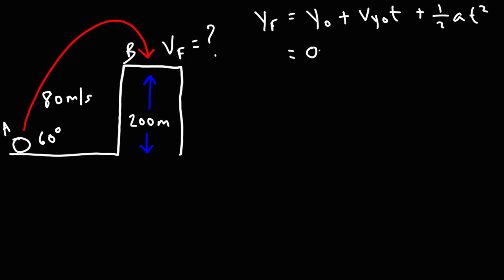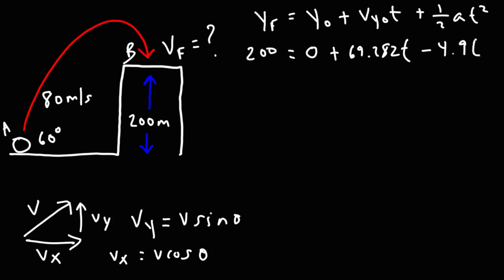So y initial is 0. That is the height at point A. At point B, y final is 200. For vy initial, we have the vector v. To find the x component of the velocity, it's v cosine theta, and to find the y component, it's v sine theta. So vy initial is going to be 80 sine 60, which is 69.282t. And then this is going to be plus 1 half times the acceleration due to gravity, which is negative 9.8. So half of negative 9.8 is going to be negative 4.9 t squared.